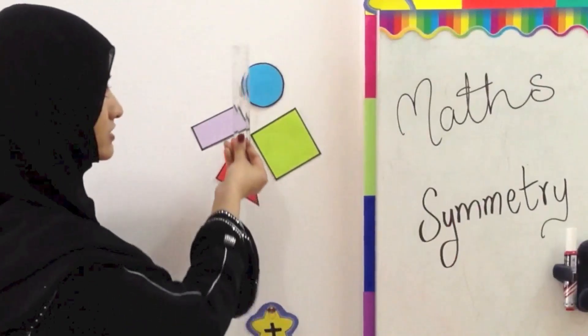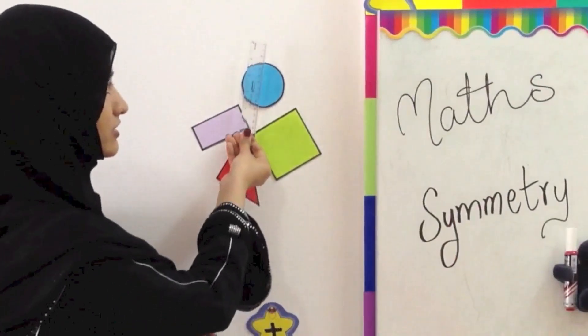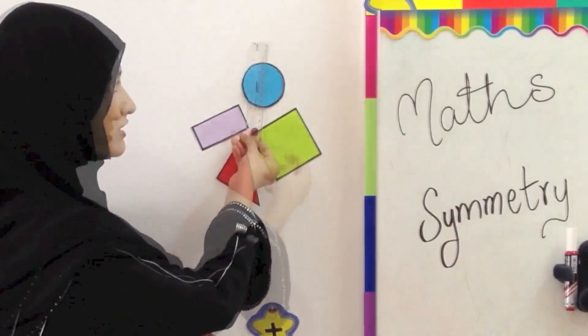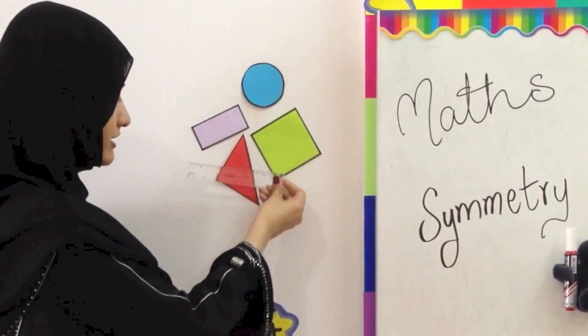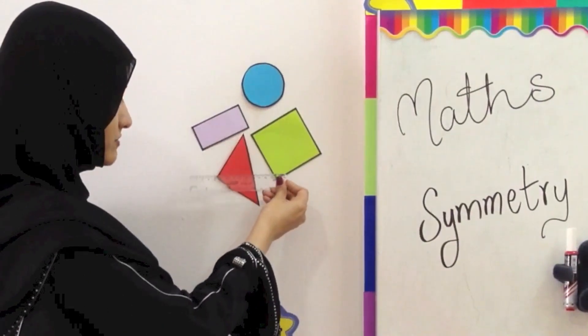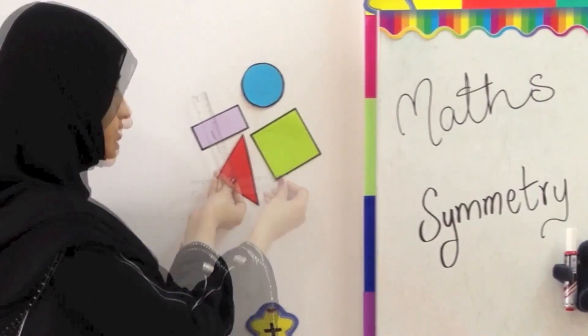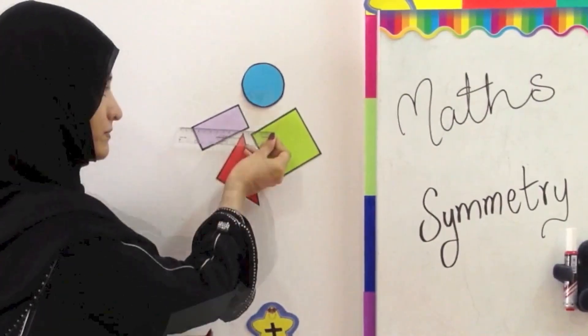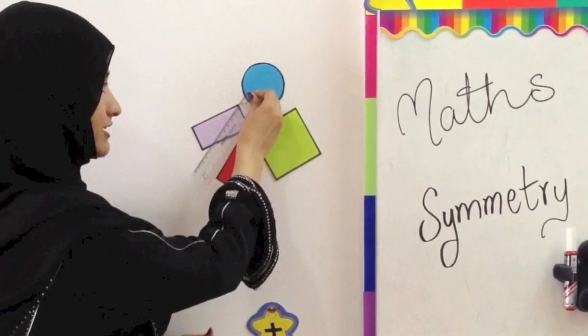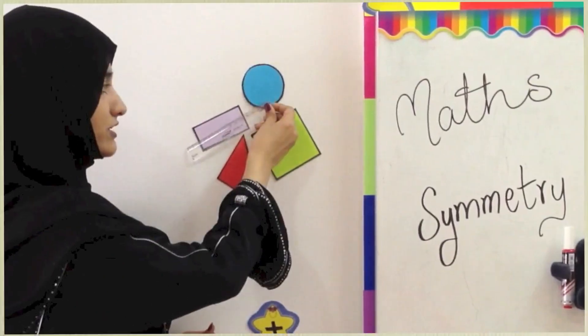Here we can see a circle — it has a standing line of symmetry. This triangle has a sleeping line of symmetry. And this rectangle has four different lines of symmetry.